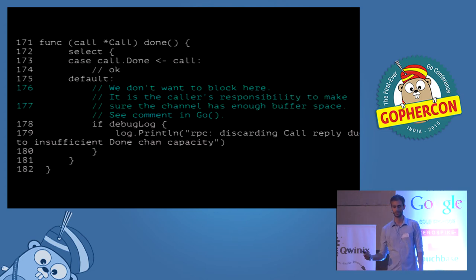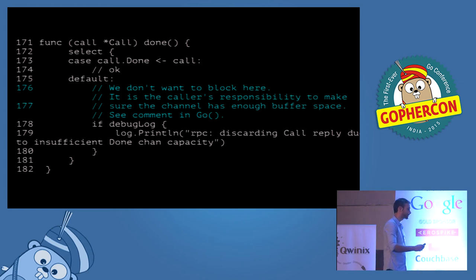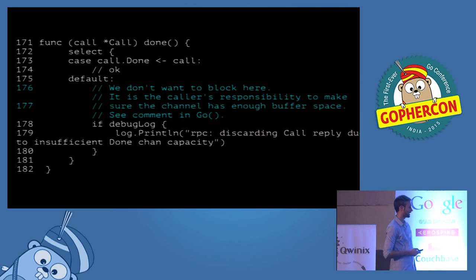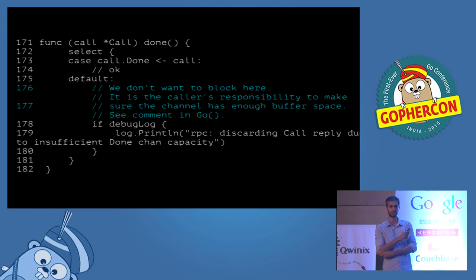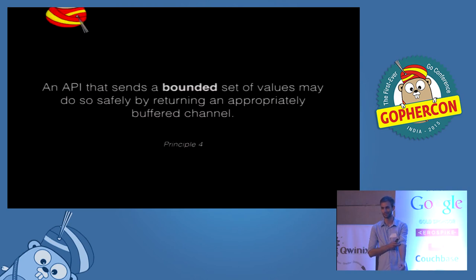The `Go` function doesn't document the behavior in this case, so I read the source code. There's a comment: 'We don't want to block here. It is the caller's responsibility to make sure the channel has enough buffer space.' And you can see it makes the same guarantee as `signal.Notify` and `time.After` — if the channel's full, your RPC reply goes into the ether. You will not get notified.